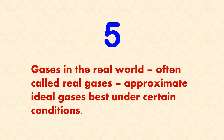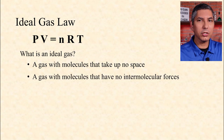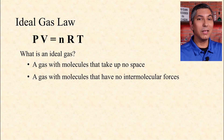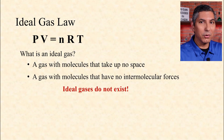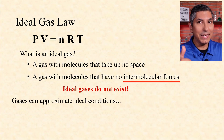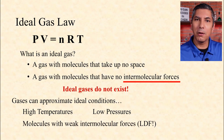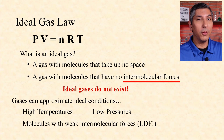Number 5. Gases in the real world, often called real gases, approximate ideal gases best under certain conditions. Ideal gases have molecules that take up no space and particles with no intermolecular forces — there's really no such thing in the real world. However, gases can approximate ideal conditions at high temperatures and low pressures. Or, when comparing different substances, gas molecules with the weakest intermolecular forces — especially those that are non-polar with only London dispersion forces — will approximate ideal conditions better than other substances.